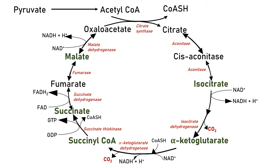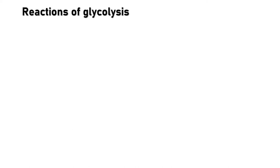Fumarate converts to malate, and malate is converted to oxaloacetate by malate dehydrogenase, forming the third reducing equivalent — NADH — and regenerating oxaloacetate. In total, three NADH molecules are formed: one from isocitrate, one from alpha-ketoglutarate, and one from malate to oxaloacetate. At all three of these stages the enzyme used is a dehydrogenase. Similarly, FADH2 is generated by a dehydrogenase. You only need to remember three additional enzymes: succinate thiokinase for succinyl-CoA to succinate, fumarase for fumarate to malate, citrate synthase as the first enzyme, and aconitase.